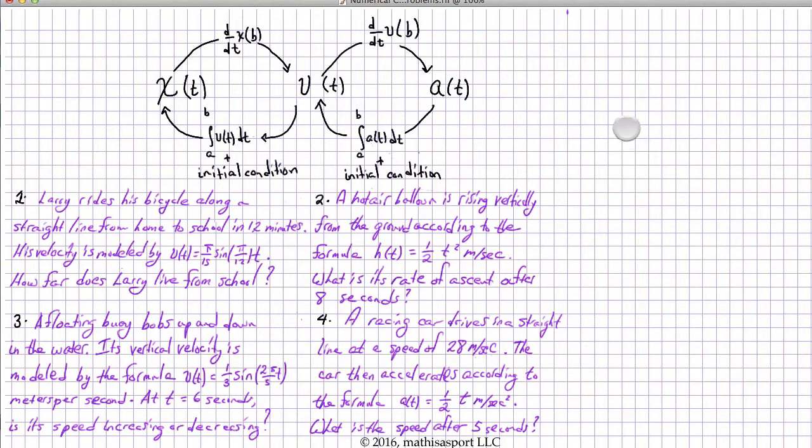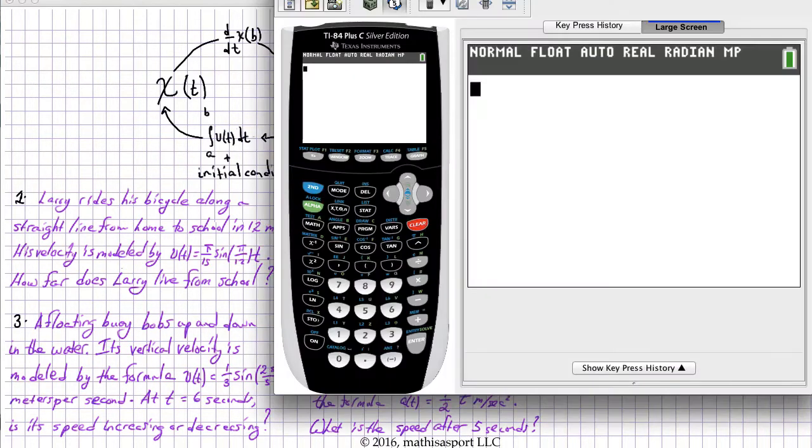What I'm going to do is, I'm going to take the signed area from 0 to 12 of the given velocity function, pi over 15, sine of pi over 12t. Now, don't ask me where this particular function came from. We'll use the graphing calculator to give us a pretty accurate approximation.